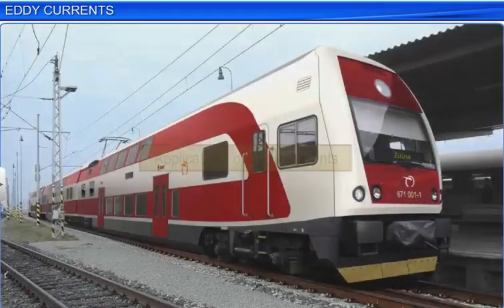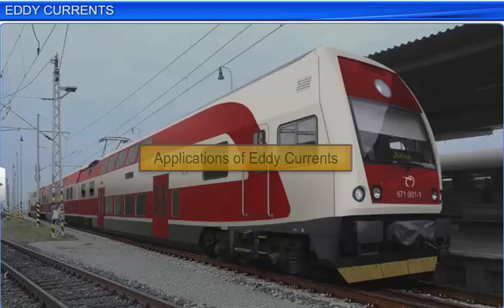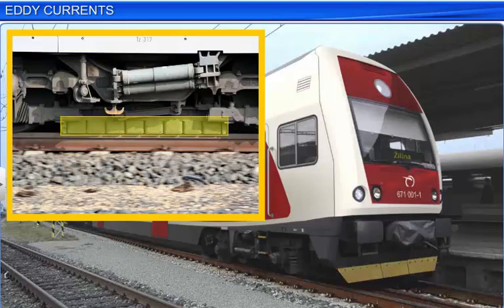Let us now study the applications of eddy currents. Strong electromagnets are situated above the rails in some electrically powered trains. When the electromagnets are activated, the eddy currents induced in the rails oppose the motion of the train. As there are no mechanical linkages, the braking effect of the train is smooth.